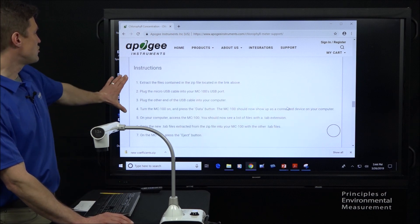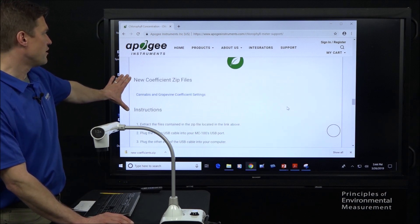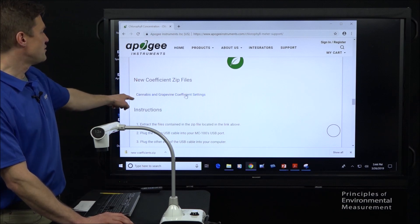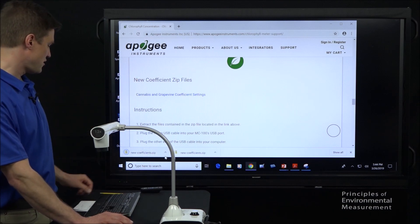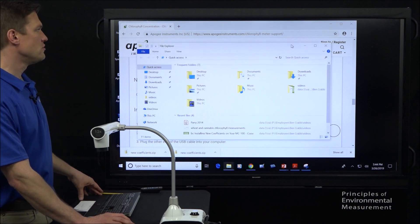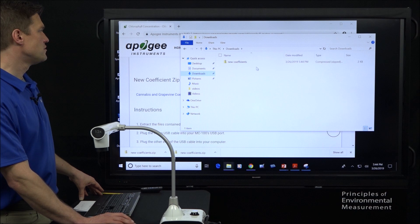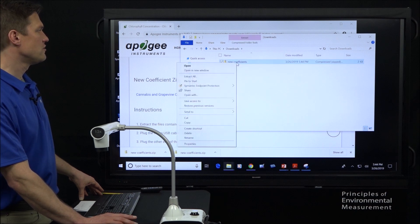We have a link here. We also have instructions here that you can follow in case my video doesn't suffice. But you can download the new coefficients right here. Now let's open up a new explorer window. We can go to our downloads. Here's the new coefficients it just downloaded.